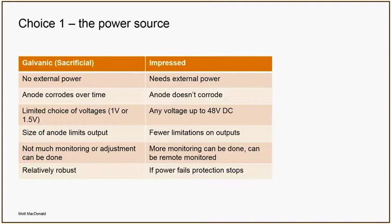Benefits of galvanic: you don't need external power. Problem: the anode corrodes over time, so eventually you run out of anode. With impressed current you pick a material where the anode doesn't corrode, so you don't have the same wastage issues. For galvanics you've only got the voltage you get out of zinc or magnesium. For an impressed system you can turn it up or down, so design-wise an impressed system gives you a lot more options. With an impressed system you could theoretically stick an enormous anode in and connect all the steel in the country to it with enormous voltage.